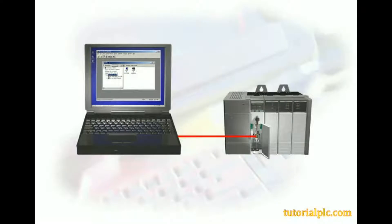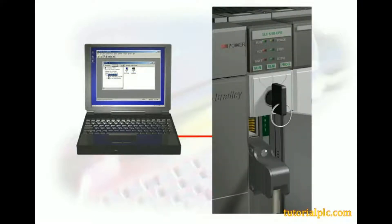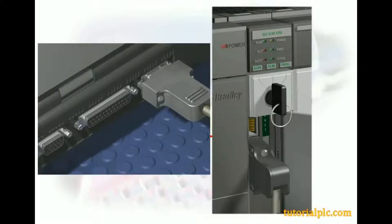The first task we must do before downloading a project or going online is to establish communications with an SLC-500 processor. In this lesson, we'll initially be establishing communication with an SLC-505 processor over a serial connection. Before communication can occur, we must make sure that our SLC-505 processor is properly connected to our computer and that power is applied to the processor's rack. Let's first confirm that the serial cable is connected to the processor's channel 0 and to our computer's serial port.